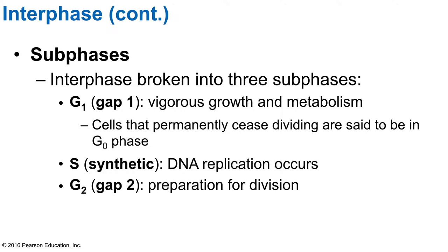If it's a muscle cell, it's going to be contracting and doing all the work it normally does. If it's a white blood cell, it goes about doing whatever work that white blood cell needs to do. The next phase is the S phase — the synthetic sub-phase — where the DNA is replicating.